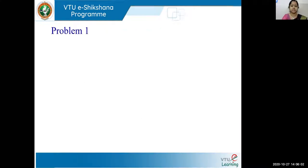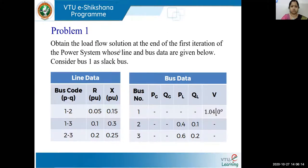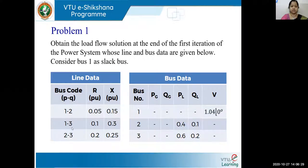We will be taking two problems and see how to get the bus voltages at all the PQ buses. Problem number one says: obtain the load flow solution at the end of the first iteration of the power system whose line and bus data are given below, considering bus one as the slack bus. The line data table is shown, and from the bus code you can see there are three buses with their line impedances given.